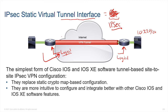Just like our traditional VPNs with cryptomaps, we're leveraging the same protection suite — AES for encryption, SHA-256 for hashing. Our data is protected the same way. What's different is that it's intuitive: you've got a separate logical interface, so if you're trying to troubleshoot, you can look at your routing table. It's a little bit cleaner.